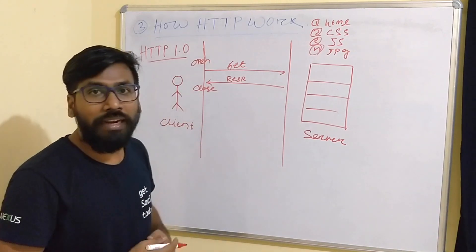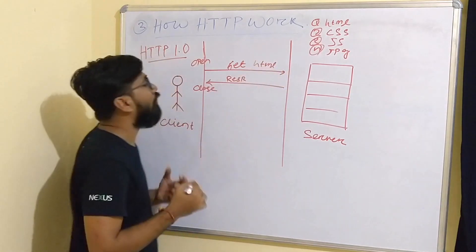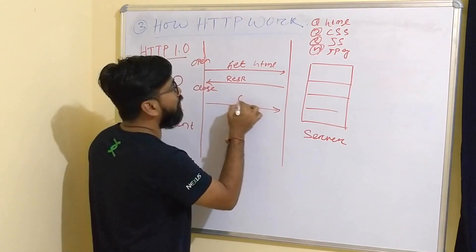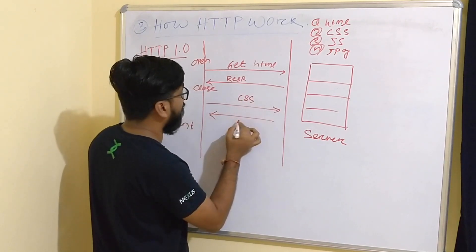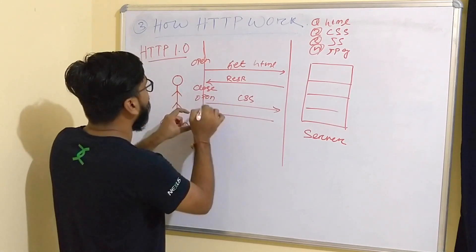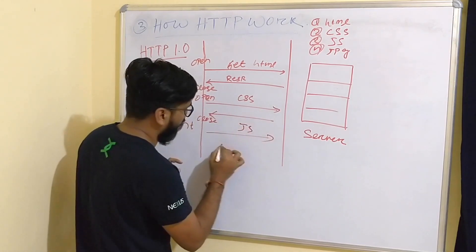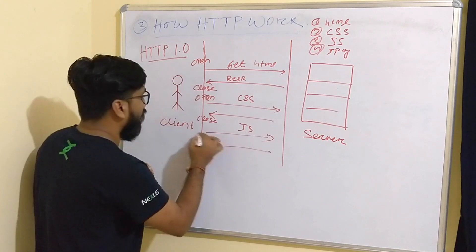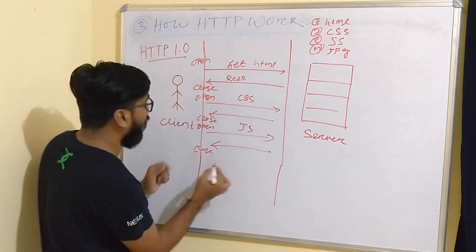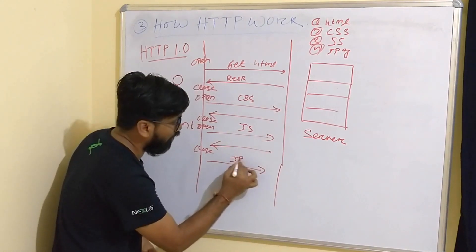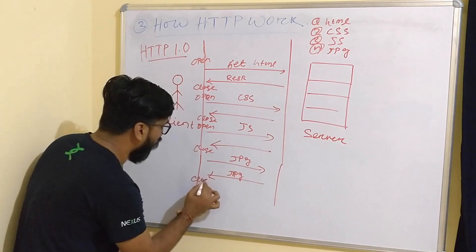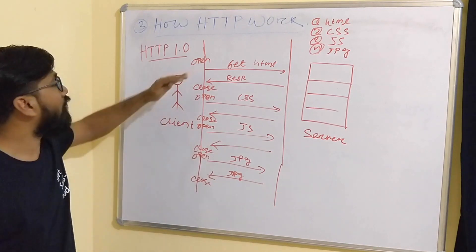To access the website you have to make separate calls for each file. First, a connection opens to get the HTML file, then closes. Then a new connection opens for the CSS file, gets the response, and closes. Then another connection opens for the JS file, gets the response, and closes. Finally, another connection opens for the JPG file, gets the response, and then closes. This is how HTTP 1.0 works.